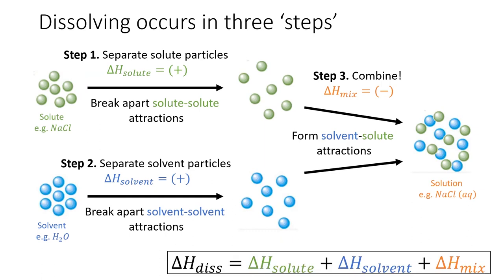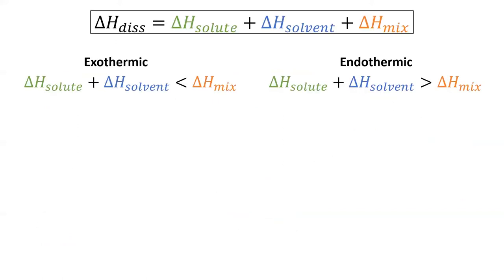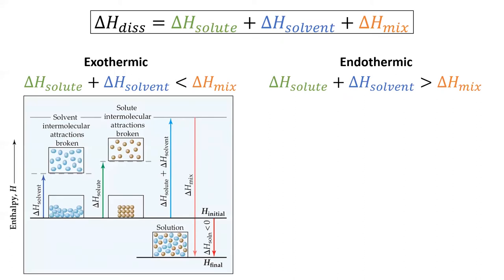We know from Hess's Law that the overall enthalpy is equal to the sum of the enthalpies of each step, so for the process of dissolving the overall enthalpy equals the sum of those three steps. Since the first two steps are endothermic and the third is exothermic, the magnitude of each step's enthalpy determines whether the overall process is exothermic or endothermic. If the exothermic enthalpy of mixing is larger than the two endothermic steps, then the overall solution process is exothermic, as shown on the energy level diagram.